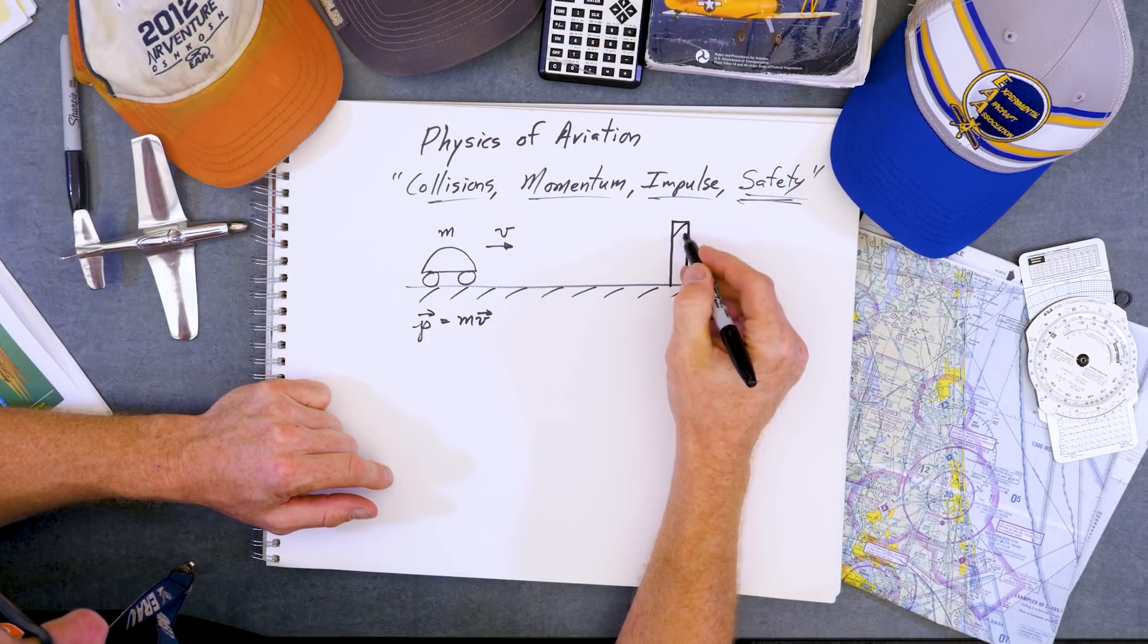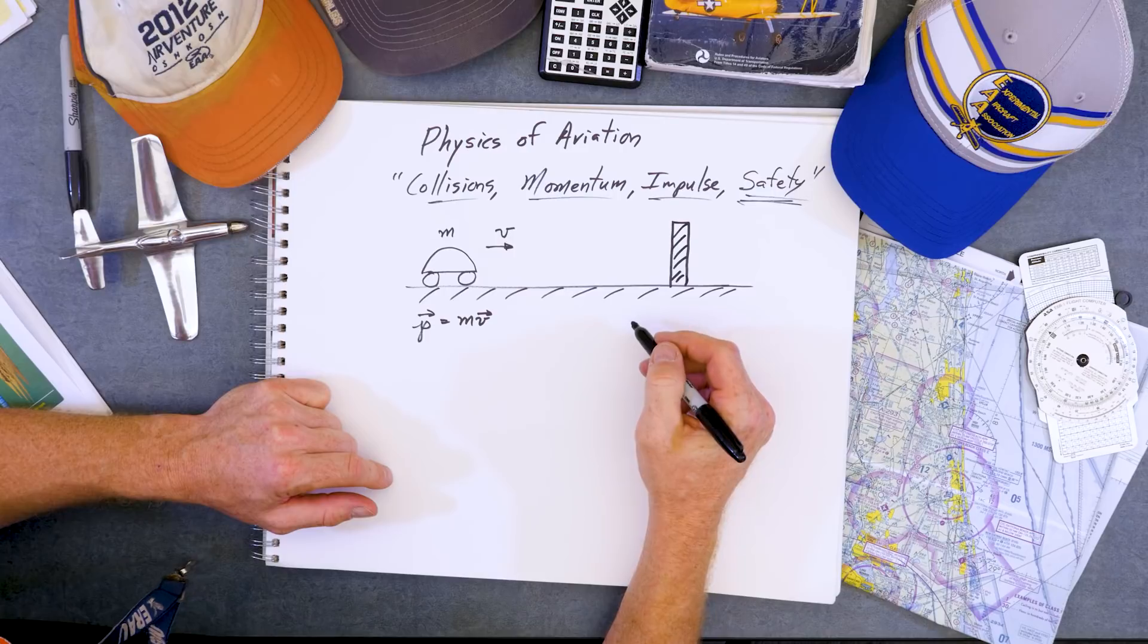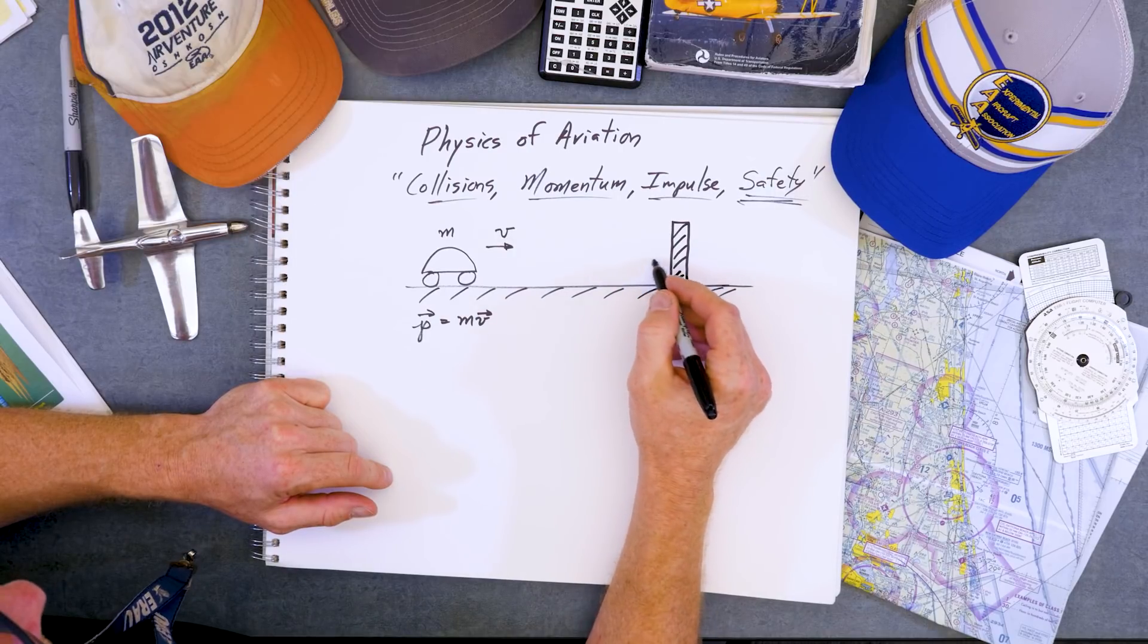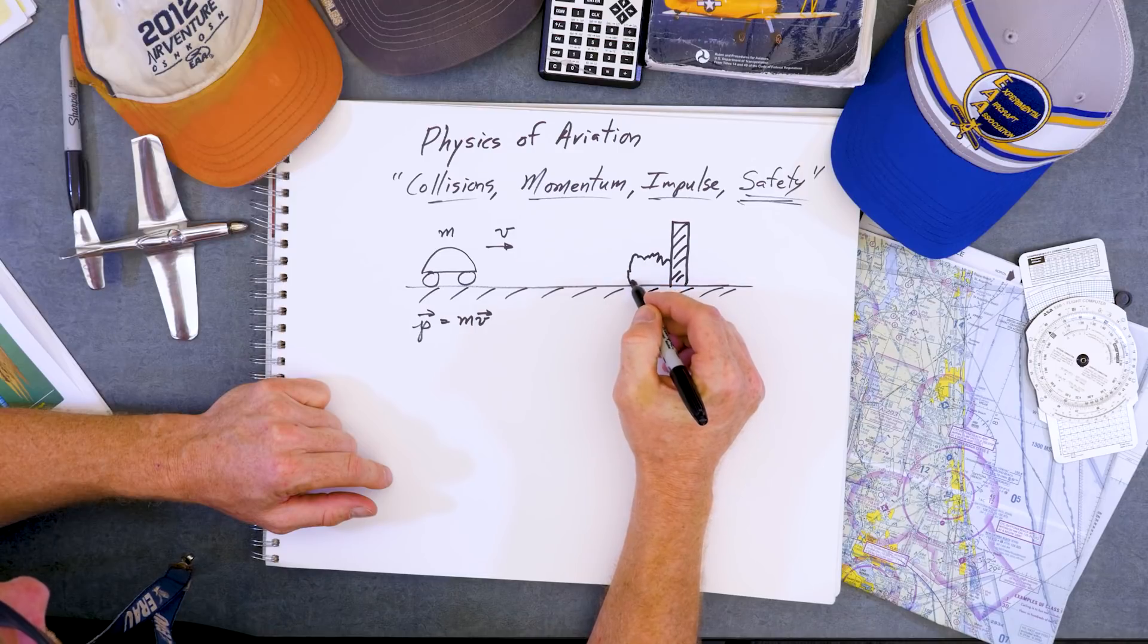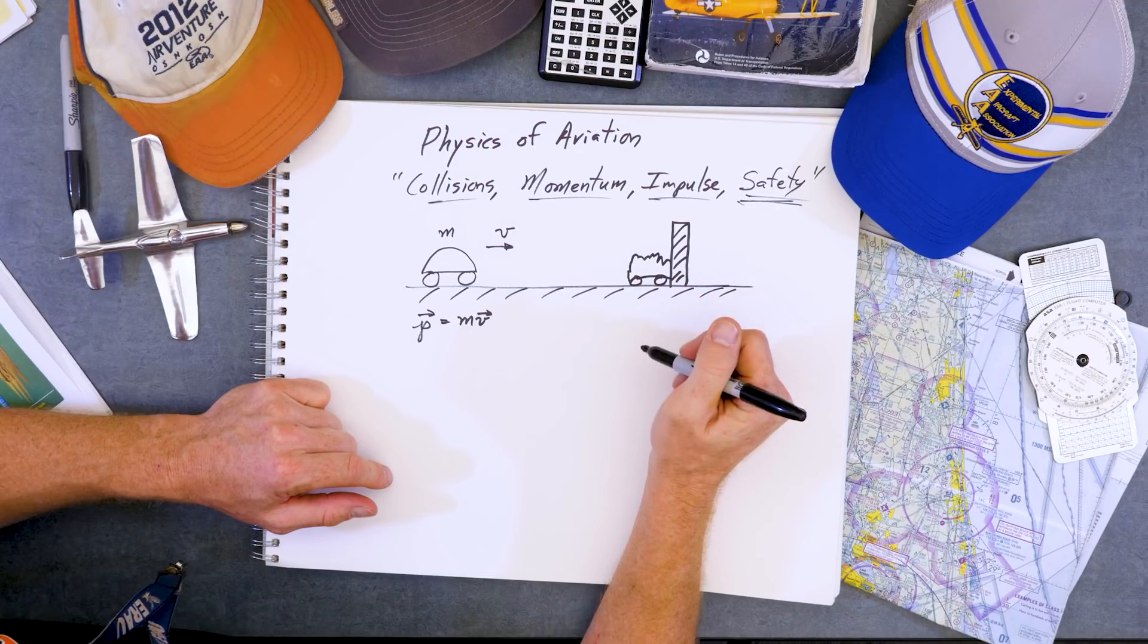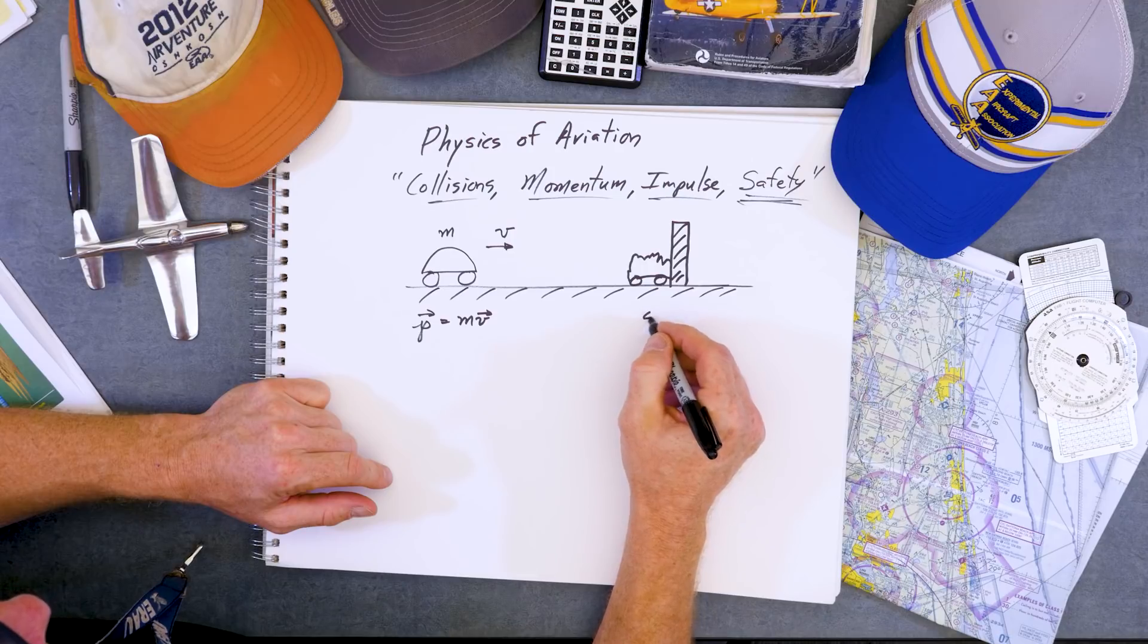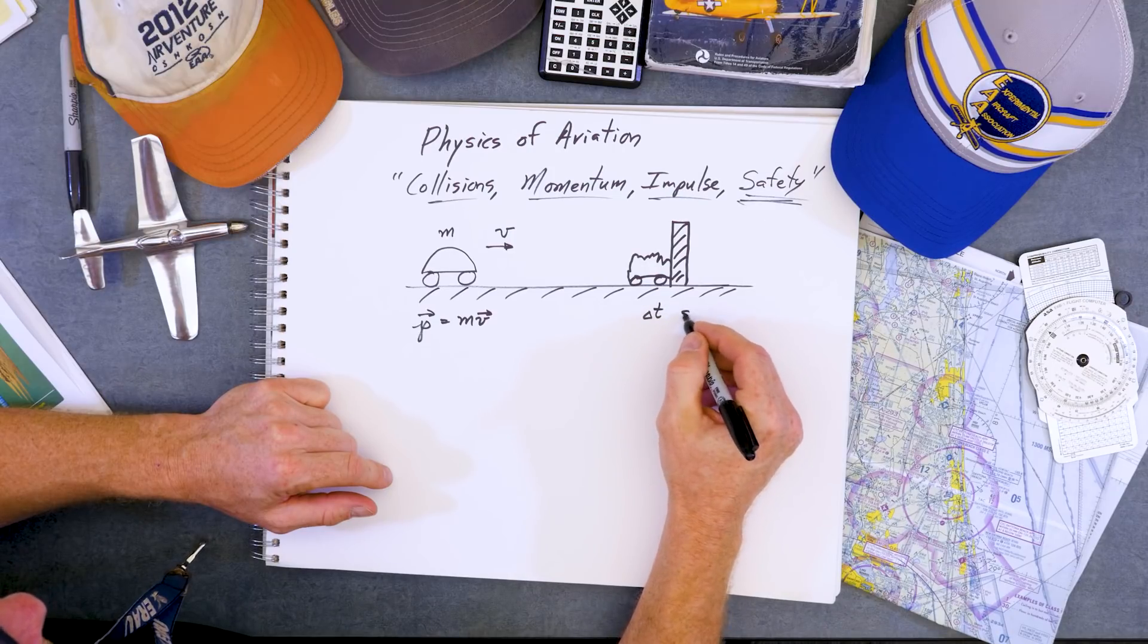And in Experiment A, we slam into a brick wall. So we have a very short time of the collision and after the collision, our VW is crunched like this. And it has a small time interval. Delta T is very small.